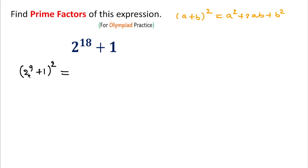Now as you can see, (2^9)^2 becomes 2^18, and 2 × 2^9 × 1 plus 1^2. After solving, you can see here...